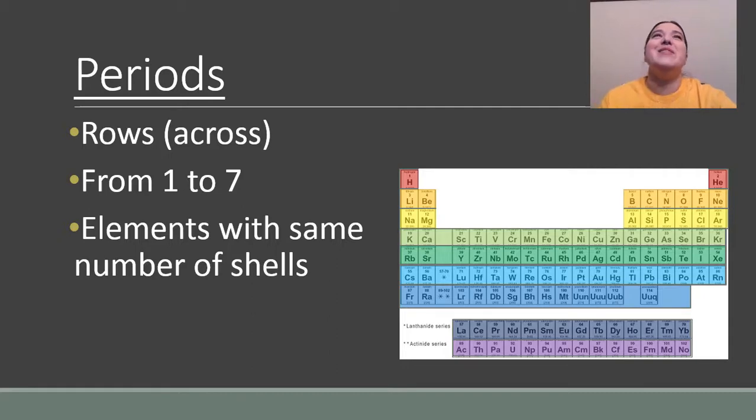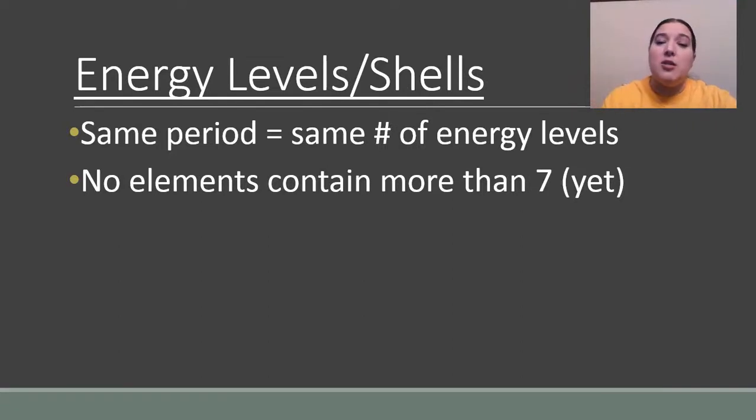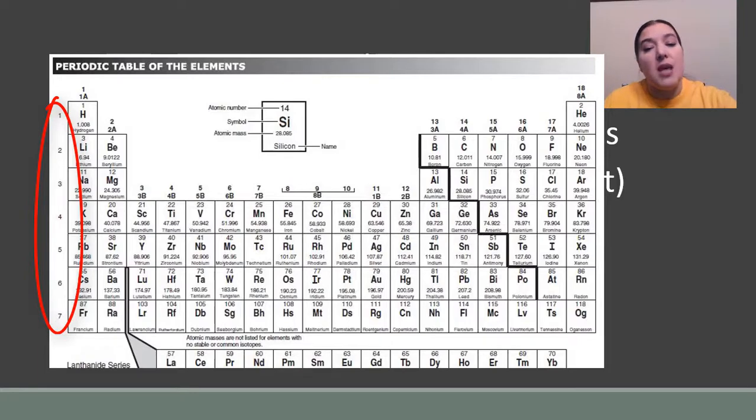It's called the periodic table because there are periods on the periodic table. When we're saying period, we mean something that repeats over and over again. And you should have realized last class, whenever you were arranging your little pieces of the periodic table, that it goes one through eight on valence electrons and then repeats. One through eight on valence electrons and then repeats. And that's what the periods are on the periodic table. It repeats that reactivity over and over and over again. So the rows across are called periods. They are numbered one through seven. And if you look on your periodic table that you can use for the star test, it has a convenient little number, one, two, three, four, five, six, seven, down the side. All of the elements in that row will share the same number of shells in the electron cloud. So just to reiterate, the number of energy levels or shells is equal to the period on the periodic table. Right now, there are no elements that contain more than seven energy levels.